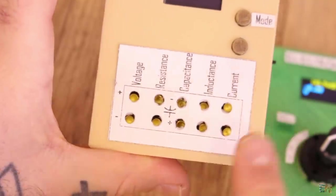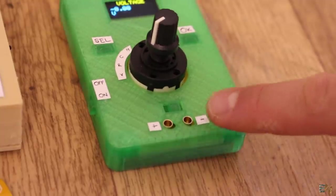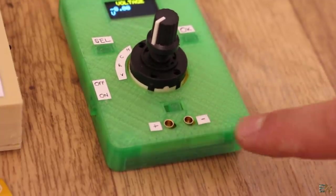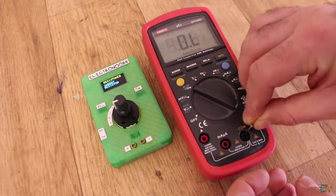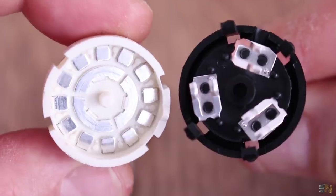But the problem is that we have different inputs for different measurements and I don't like that. I want to have just a single input for all the measurements, just as any other multimeter you can find on the market. For that we need this key component and we'll see what this is and why it's so important.